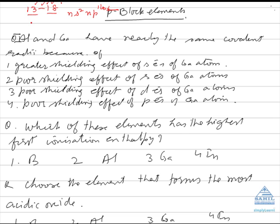Aluminium and gallium have nearly the same covalent radii because aluminium follows s-block elements while gallium follows d-block elements. D orbitals are poor shielders, so before gallium the d orbital is fully filled. As a result, due to the poor shielding effect of d electrons of gallium, aluminium and gallium have nearly the same size.